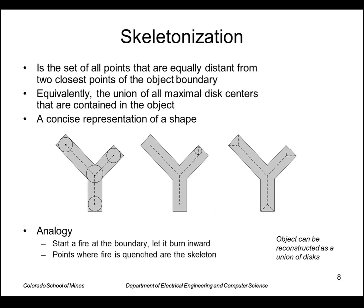Skeletonization is very useful for extracting properties of regions. It's a concise representation of a shape. Basically we want the skeleton, or just a few line segments that describe the shape like this. It's defined as the set of all points that are equally distant from the two closest points of the object boundary. You can think of that as the union of all disk centers that are contained in the object.